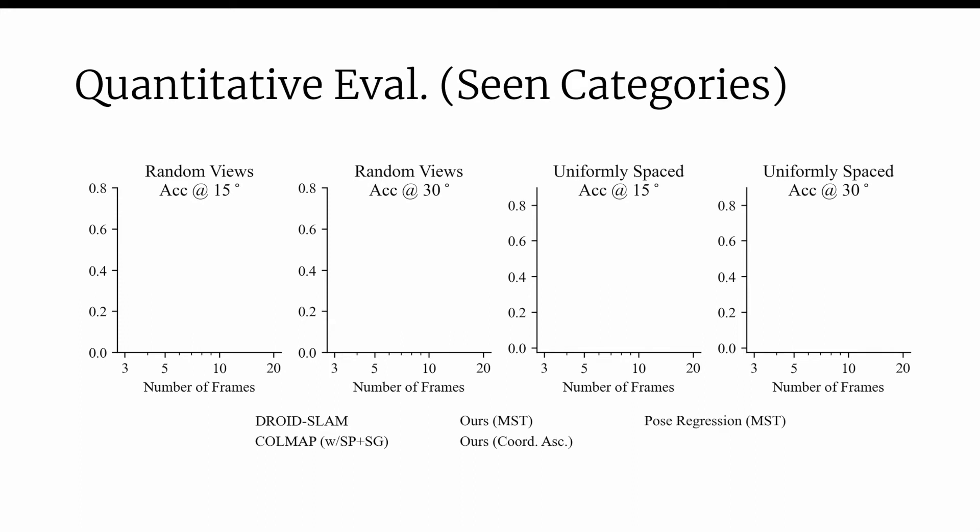We evaluate our approach against DROID-SLAM, a state of the art SLAM approach, and COLMAP with SuperPoint and SuperGlue feature matching. We find that these correspondence-based approaches struggle in sparse view settings and do not start to work until roughly 20 images, which is arguably no longer sparse.